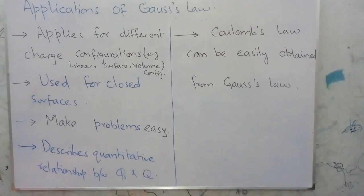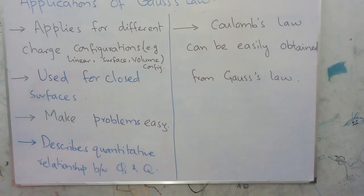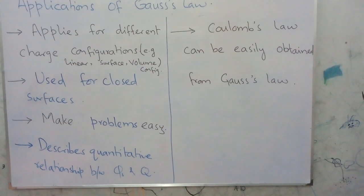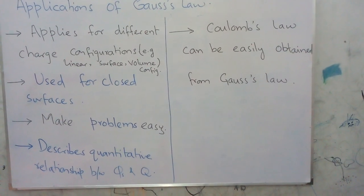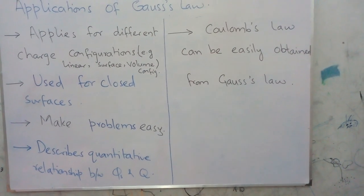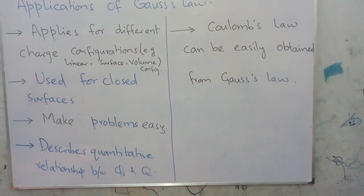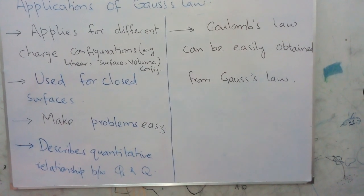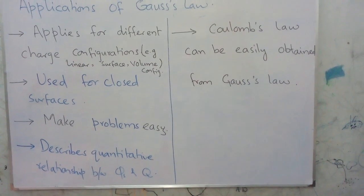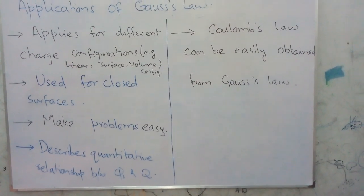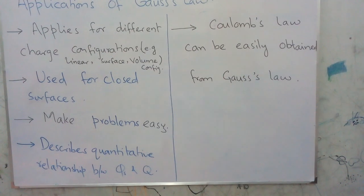The next reason for Gauss's law is that it describes the quantitative relationship between flux and charge. When we define Gauss's law, the basic relationship is phi equals 1 over epsilon naught times q. This means that both flux and charge appear in this equation, describing the relationship between these two quantities.